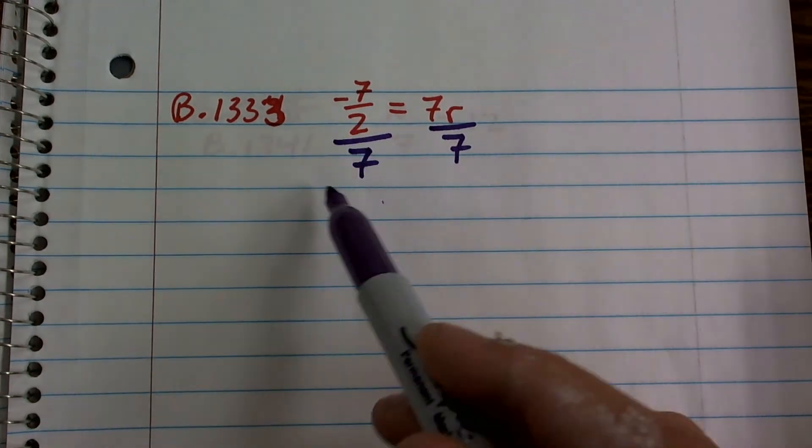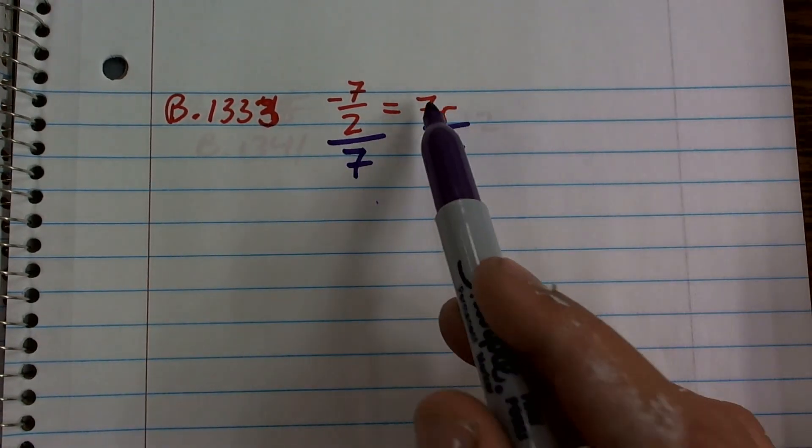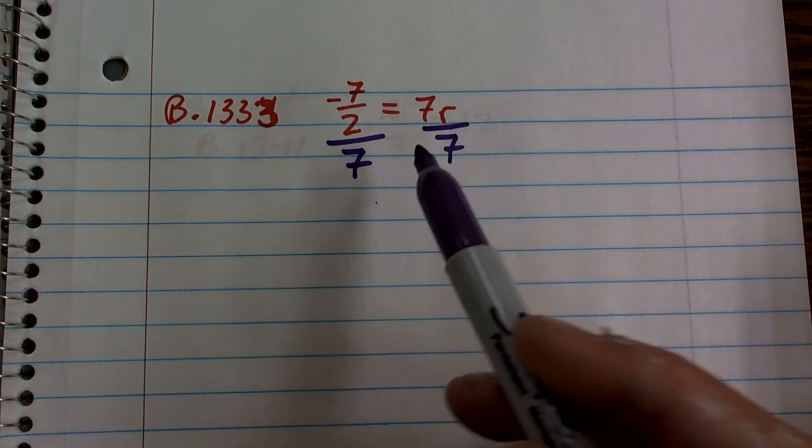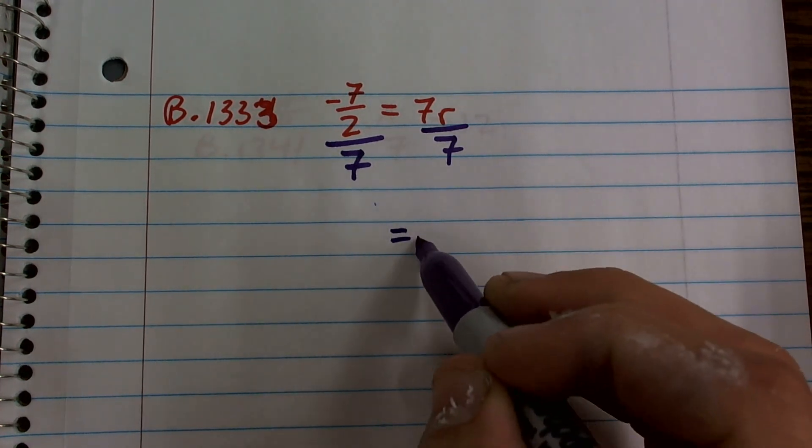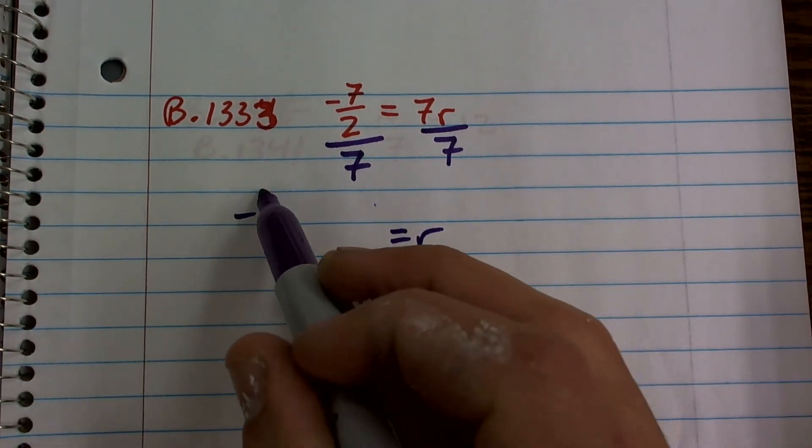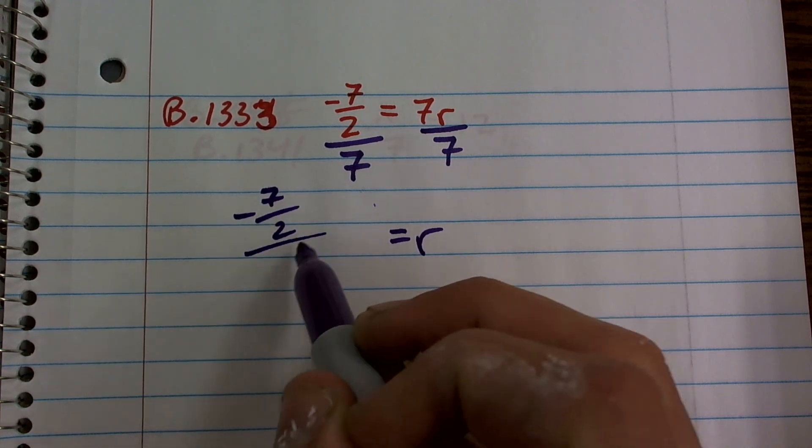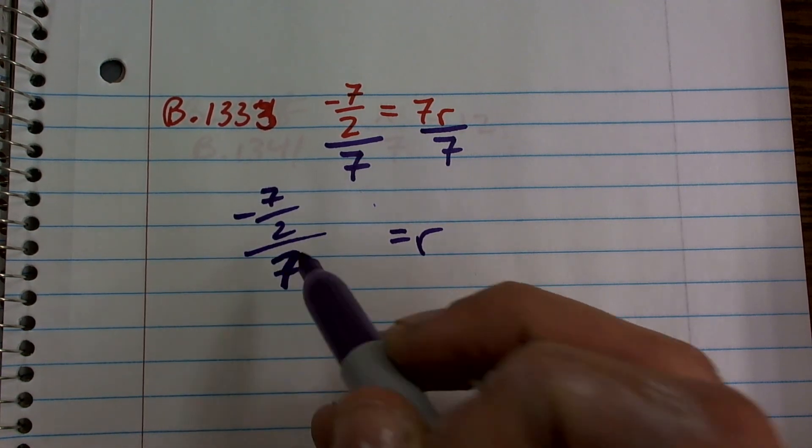So I know this over here looks crazy, but we know that 7 divided by 7 equals 1, and 1 times r is equal to r. So all I need to do is just figure out how do I take negative 7 divided by 2 and divide it by 7.